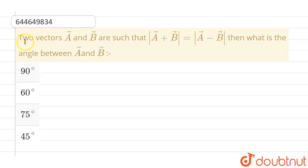Hello everyone. If we talk about this question, this given question is two vectors, A vector and B vector are such that magnitude of A vector plus B vector is equals to magnitude of A vector minus B vector. Then what is the angle between A vector and B vector?